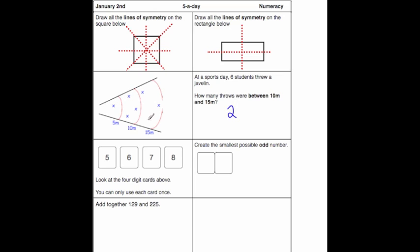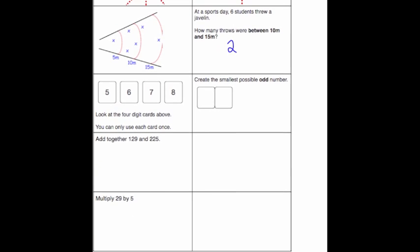The next question says we've got the digits 5, 6, 7, and 8, and we can only use each card once. We've got to make the smallest possible odd number. To be odd it's going to have to end in either 1, 3, 5, 7, or 9. We've got 5 and 7, and one of those has to be at the end. We want it to be as small as possible, so we're going to put the smallest value in the tens place. So 57 would be the smallest odd number.